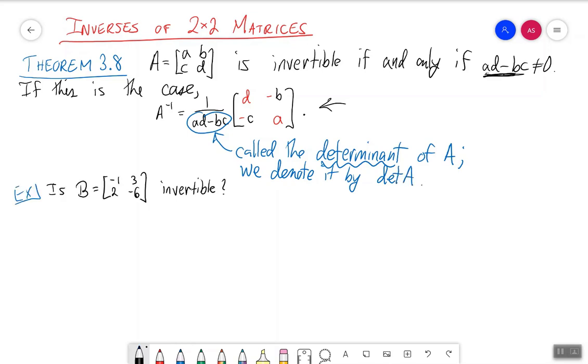We can use this theorem to give an alternative way to decide that the matrix B equals minus 1, 3, 2, minus 6 from the intro video for this lesson is invertible. Well, we just look at the determinant of that matrix.